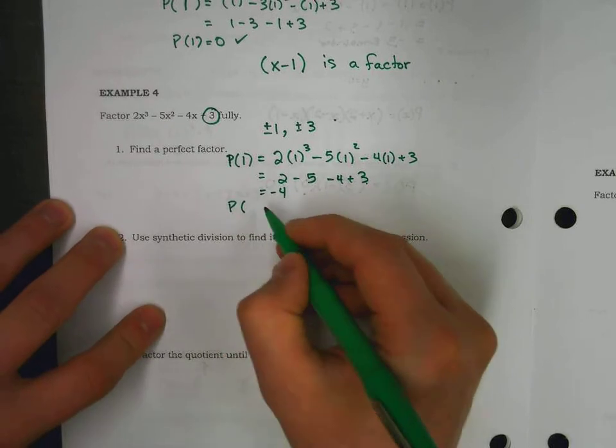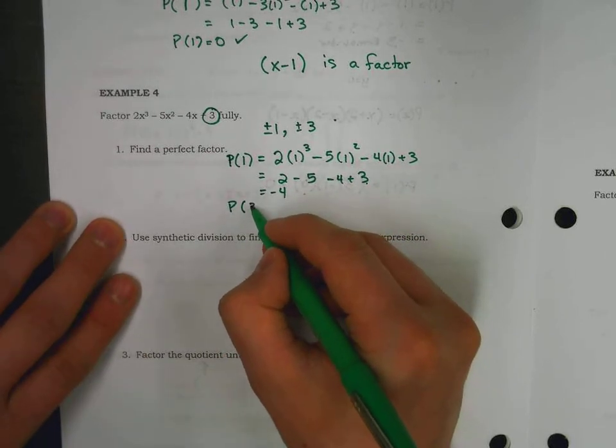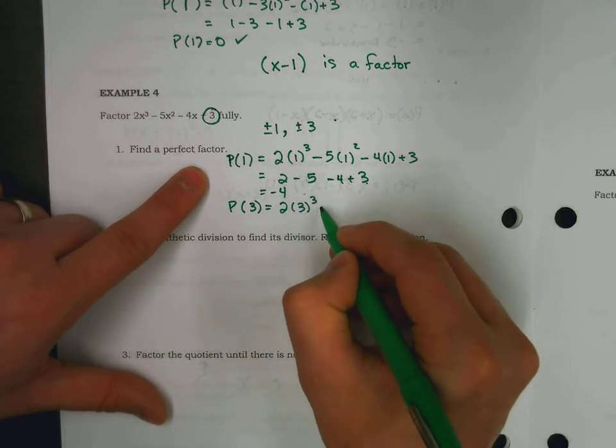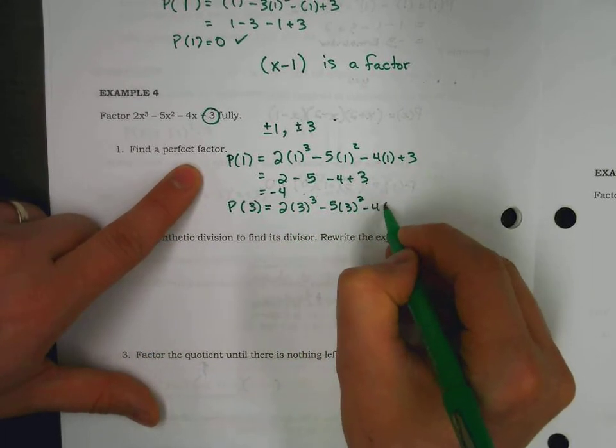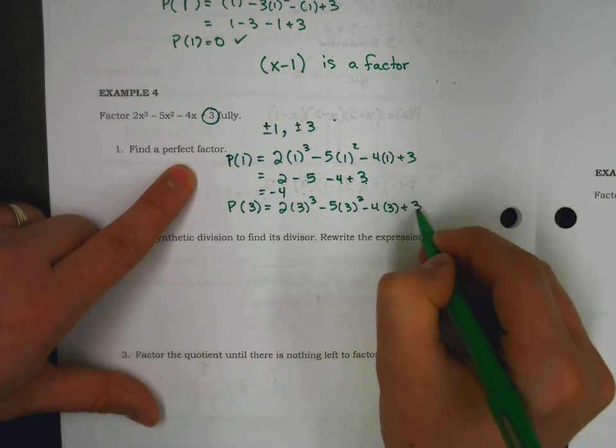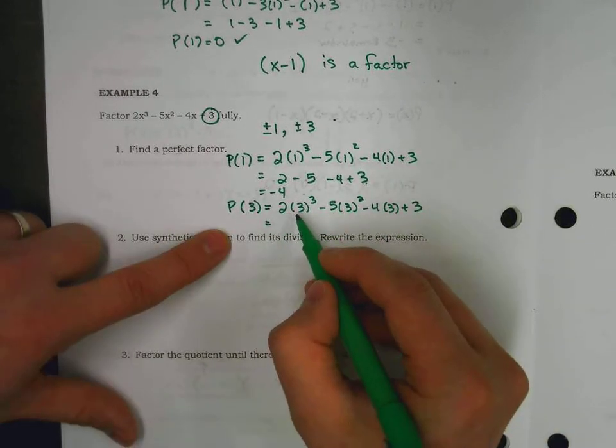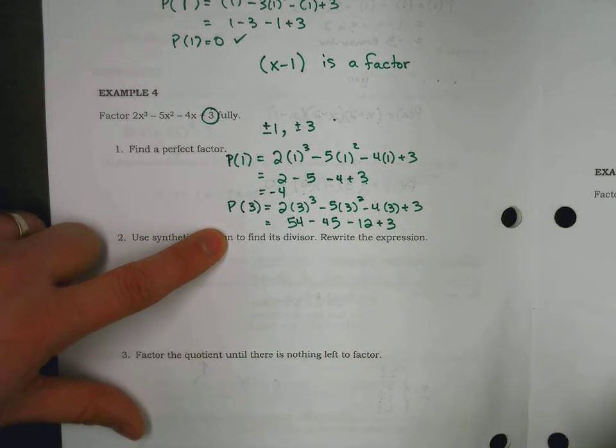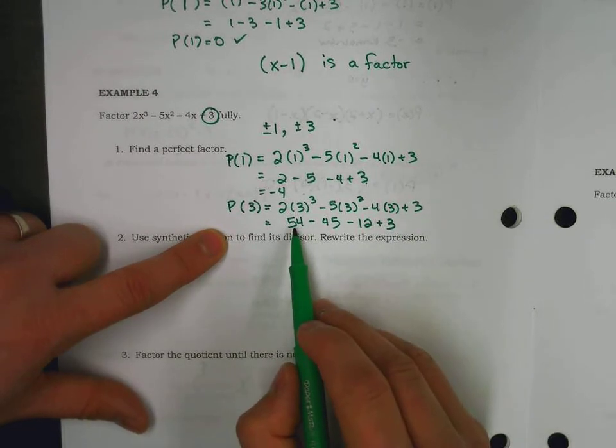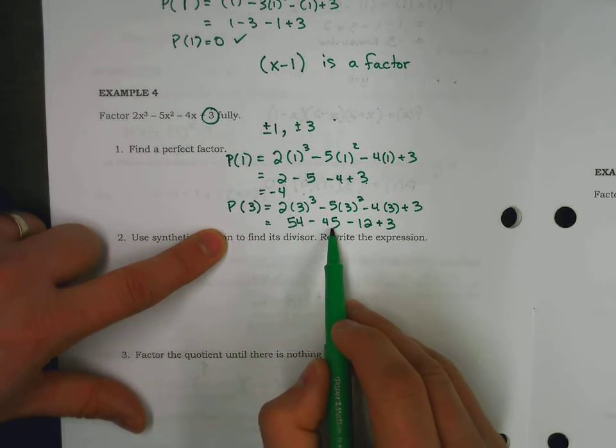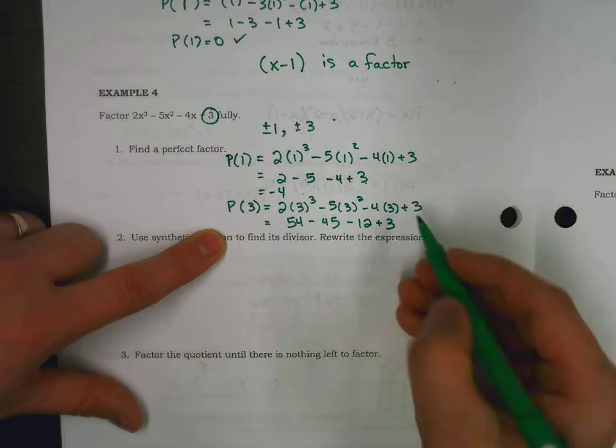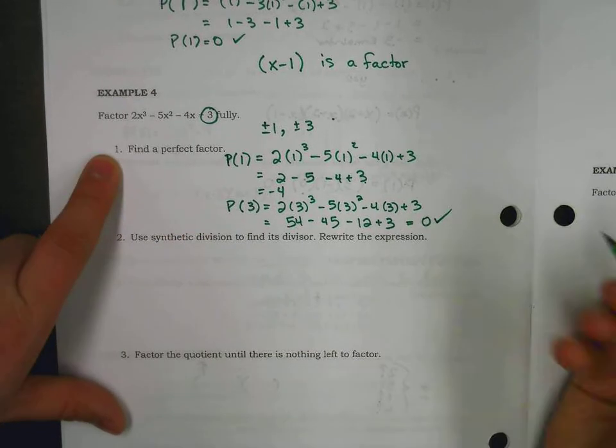I'll stick with the positive numbers for a moment and try a 3. 2 times 3 cubed minus 5 times 3 squared minus 4 times 3 plus 3. We end up with 2 times 27. 5 times 9 minus 12 plus 3. What we have is 54 minus 45 is 9. 9 minus 12 is negative 3. A negative 3 and a positive 3 is in fact 0. Perfect.